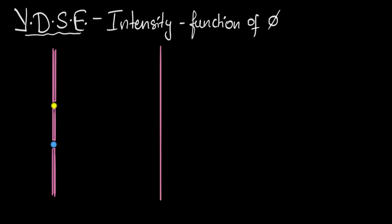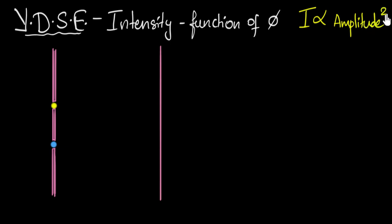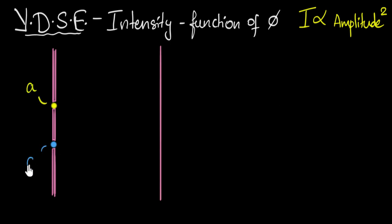Intensity of any oscillation turns out to be proportional to the amplitude of the oscillation squared. Because intensity is proportional to amplitude squared, that means to figure out the intensity of light here, I need to figure out what will be the resulting amplitude when the light meets. So let's assume that the amplitude of the waves produced by these sources is A. Then we'll figure out what the resulting amplitude is going to be when they meet, and when we square that, we'll get the resulting intensity.